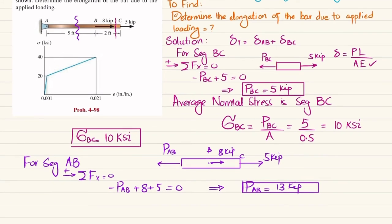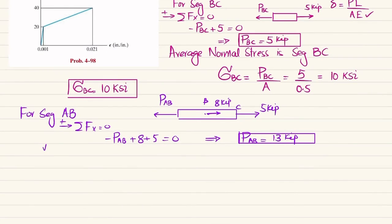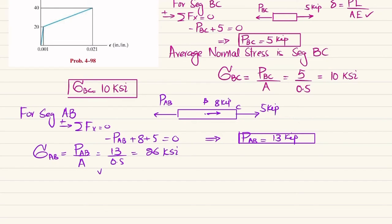Now we find the average normal stress for segment AB. Sigma_AB equals P_AB divided by area, which is 13 divided by 0.5, giving 26 ksi. So the average normal stress in portion AB is 26 ksi.